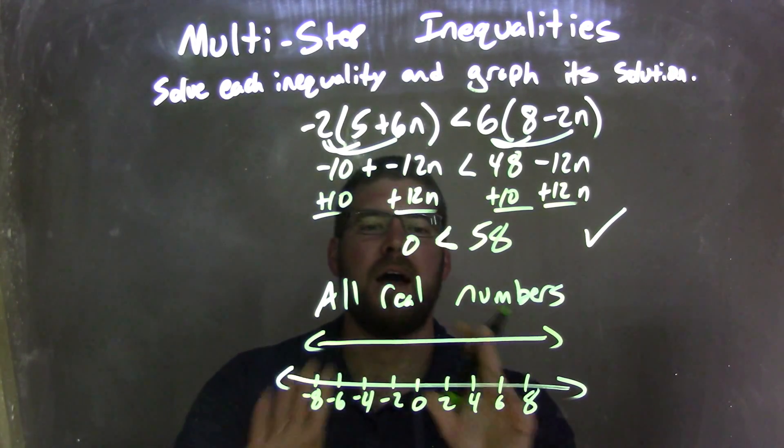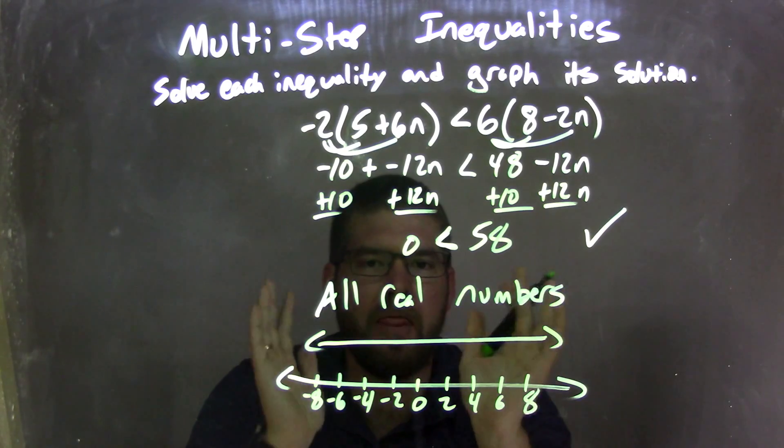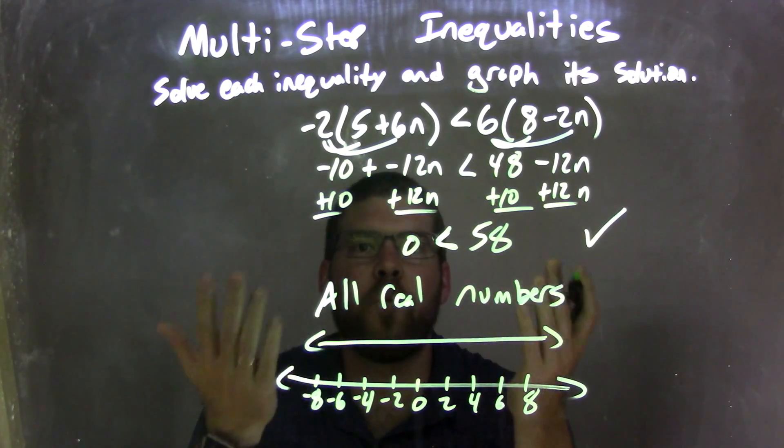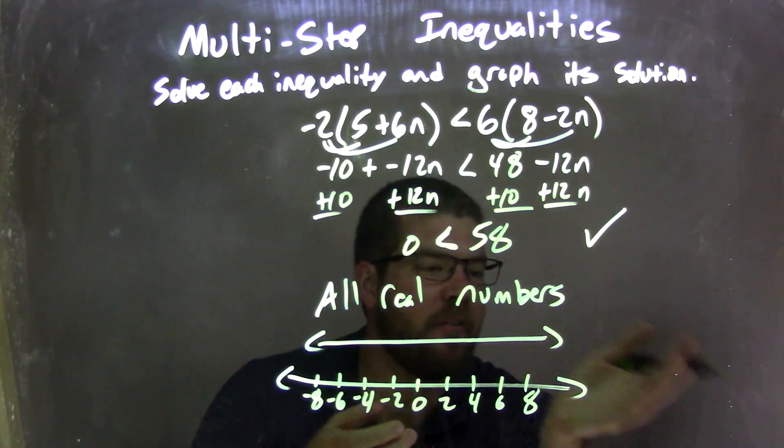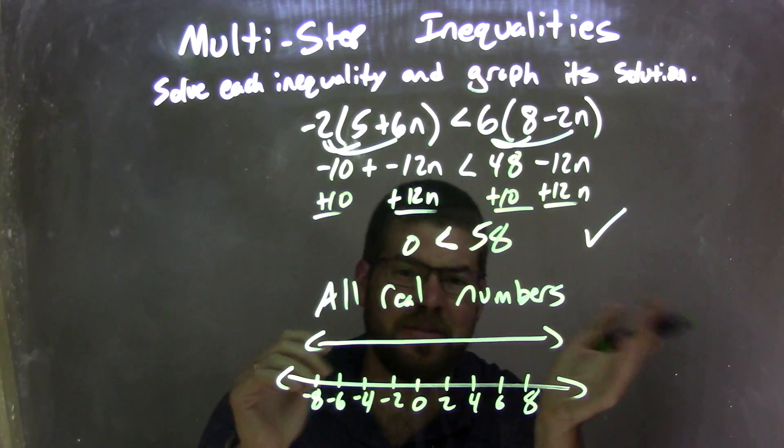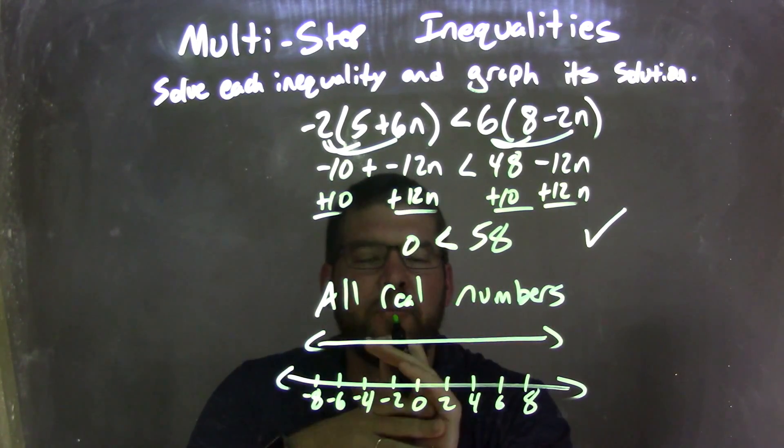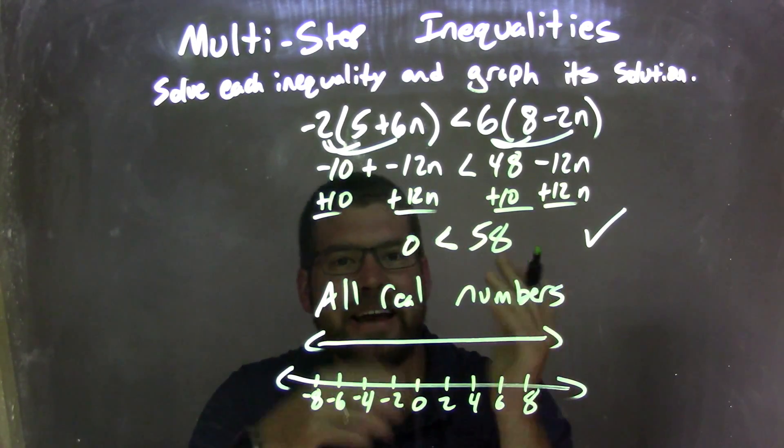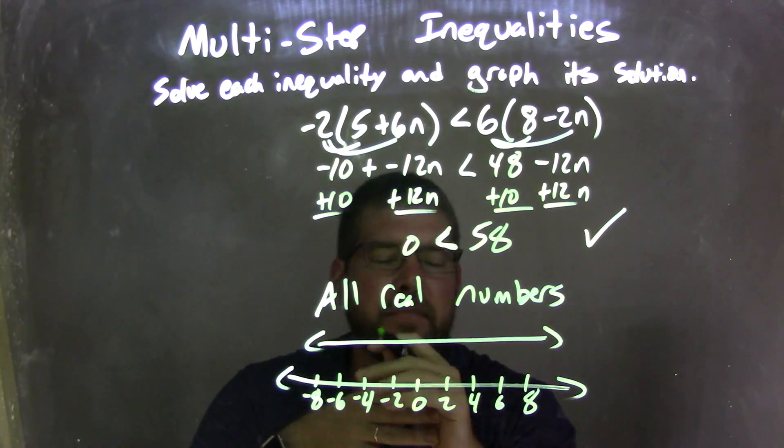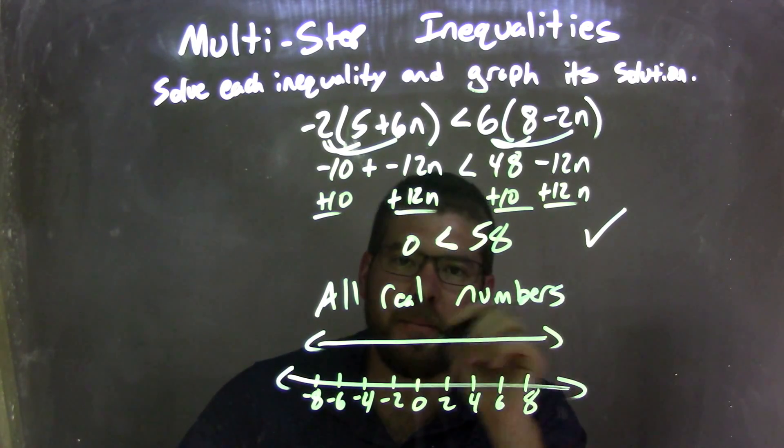let's put a line and an arrow going in both directions, meaning that all these numbers, no matter what the numbers are, they will work for this inequality. Negative 50, positive 50, a million, any real number that we want we can plug in and we'll make this work. So our graph matches our final answer of all real numbers.